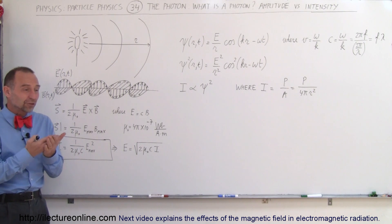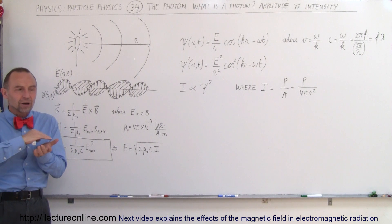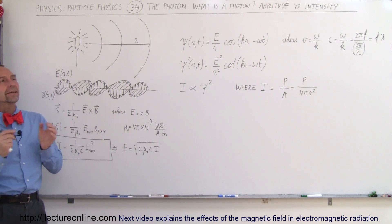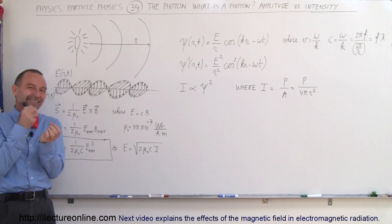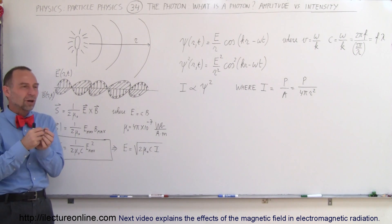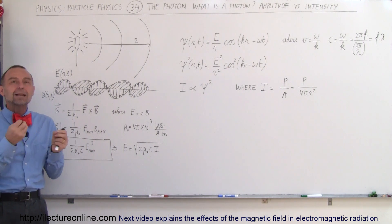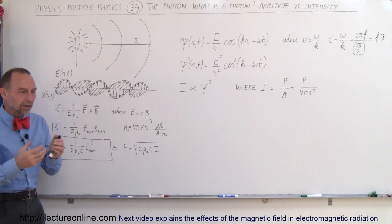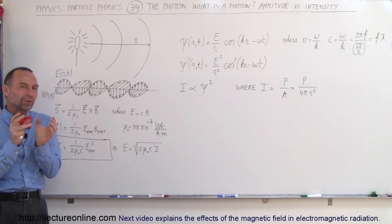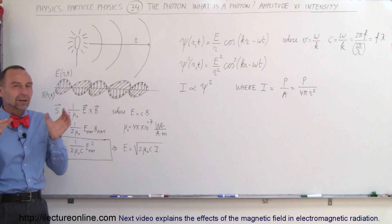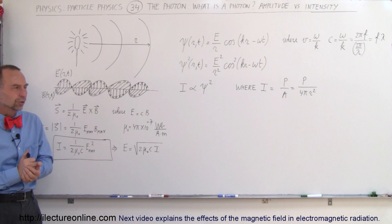We can describe a photon in terms of how much energy it contains, how long the wavelength is, or how it can deposit energy instantaneously onto an electron or atom. It's the mediating particle for electromagnetic forces. We can describe the photon in many ways, but finding a definitive size is very difficult.